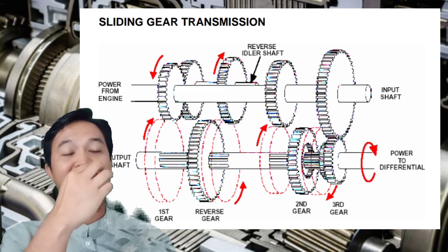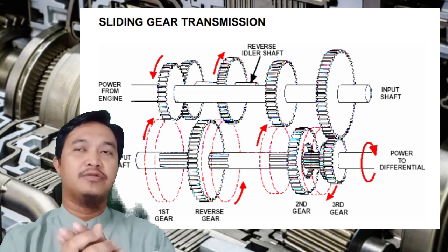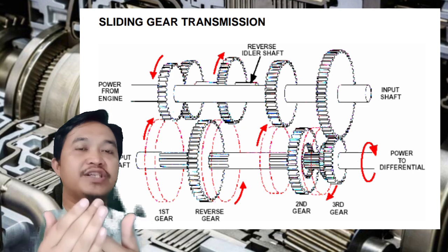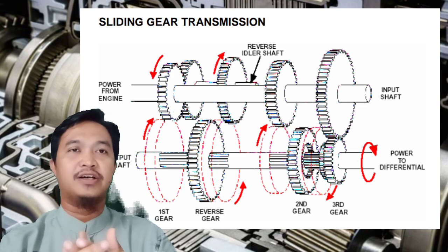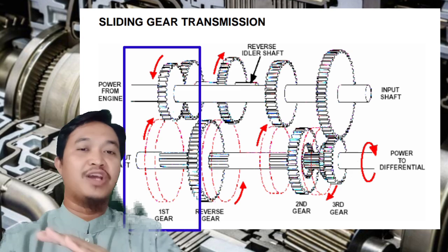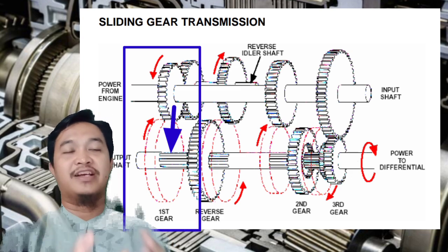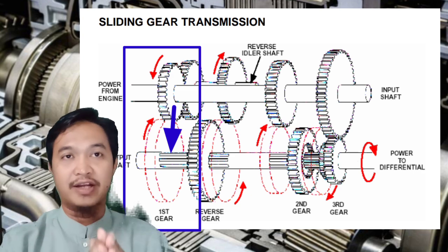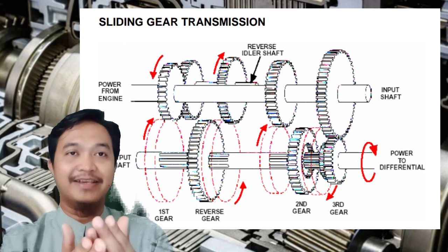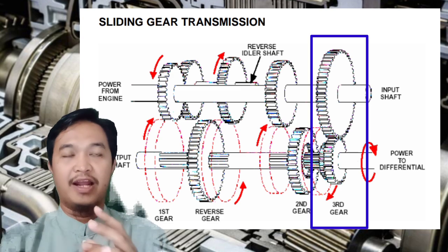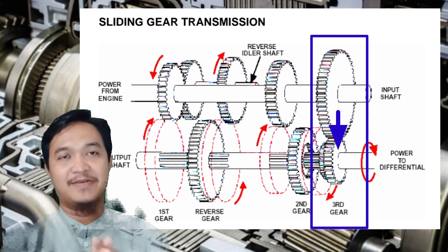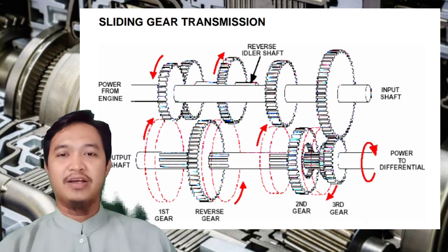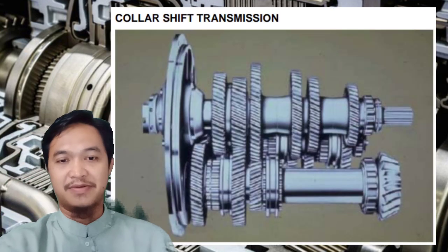Pemilihan gear bergantung pada rasio. Biasanya kalau membutuhkan torsi, inputnya adalah gear kecil dan outputnya adalah gear besar. Sebaliknya, jika membutuhkan speed atau kecepatan tinggi, maka inputnya adalah gear besar dan outputnya adalah gear kecil.